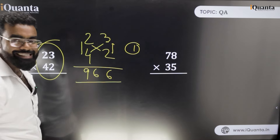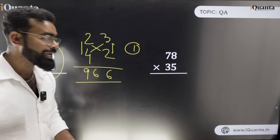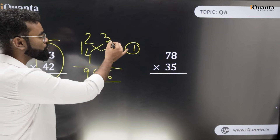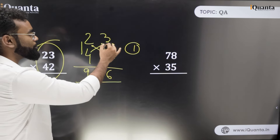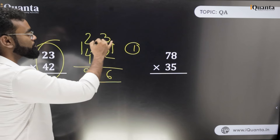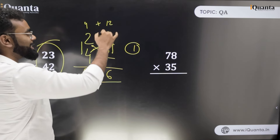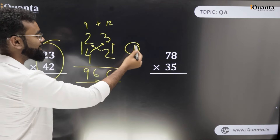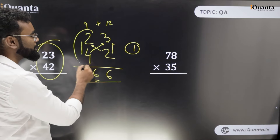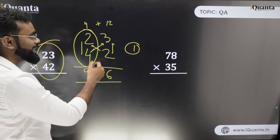Let me repeat the steps. First: 3 into 2 is 6. Next, the cross multiplication: 2 into 2 is 4, and 4 into 3 is 12, then 4 plus 12 is 16 — write 6 and carry forward 1. Finally, 2 into 4 is 8, and the carry forward 1 adds to give 9. So the answer is 966.